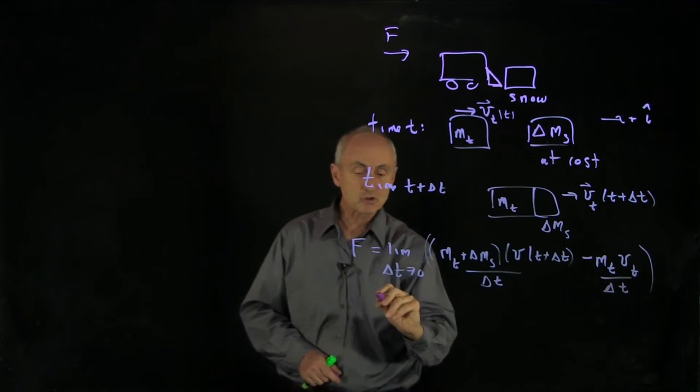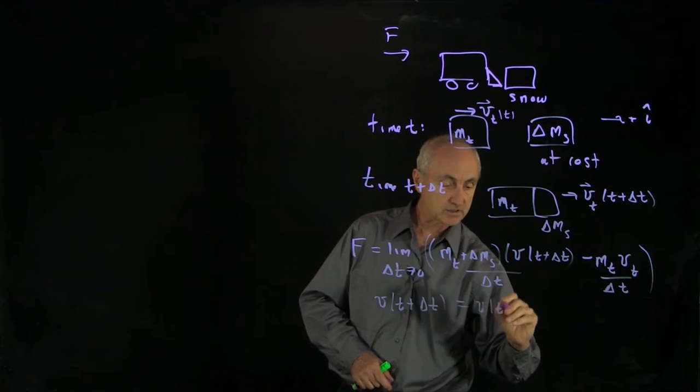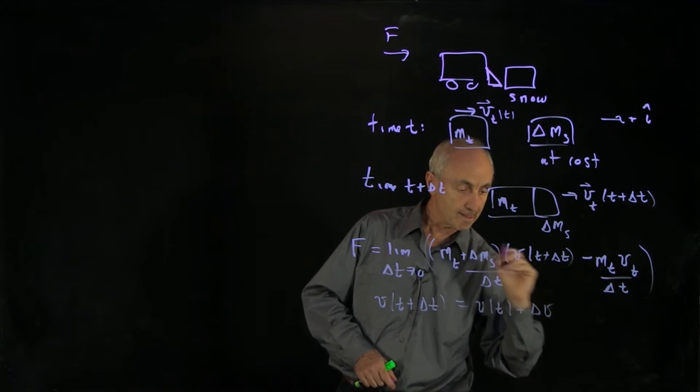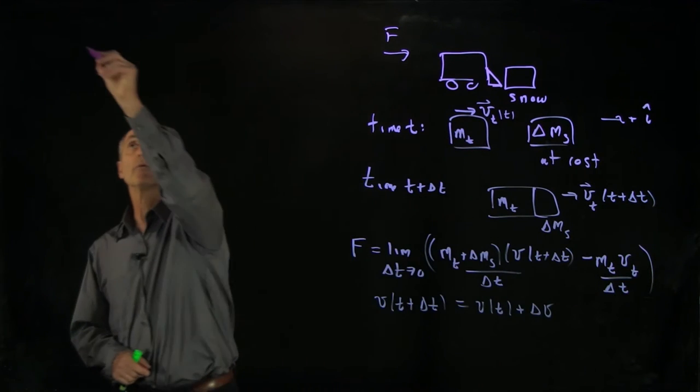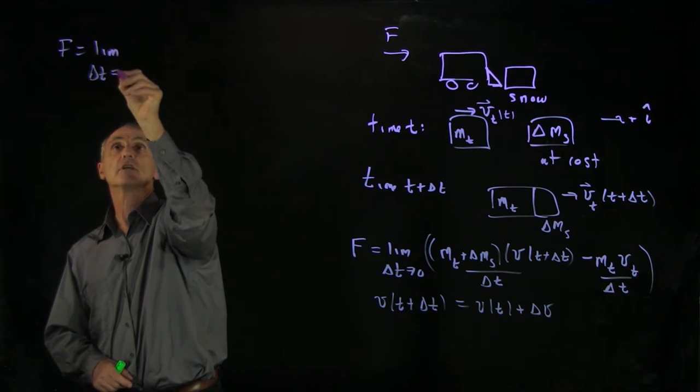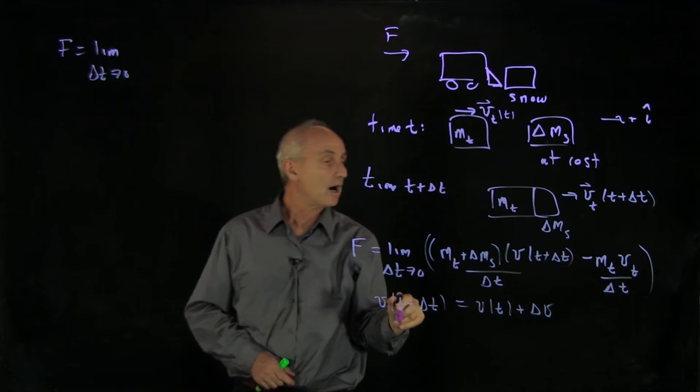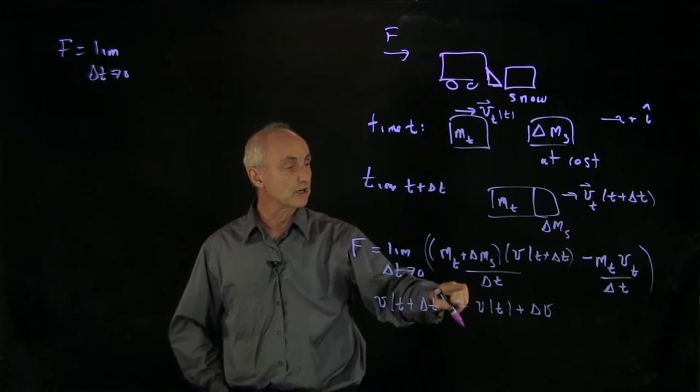Now, as usual, we're going to say that the truck has changed its velocity in this interval. And what we want to do now is write out our equation. We have f equals the limit, as delta t goes to 0. Now, when we write this out, notice that we're going to have a number of terms here.